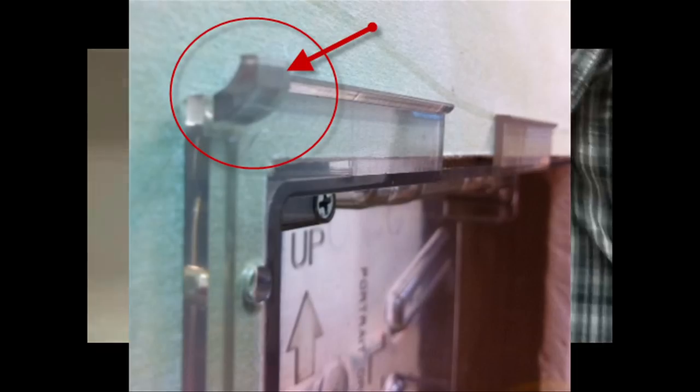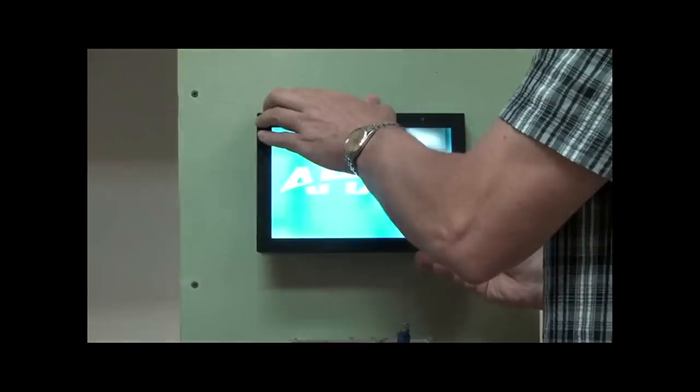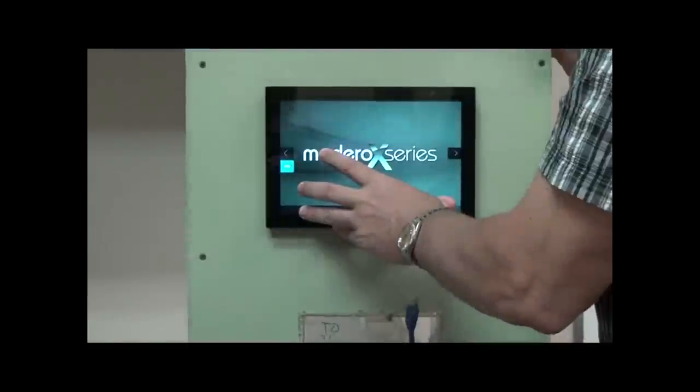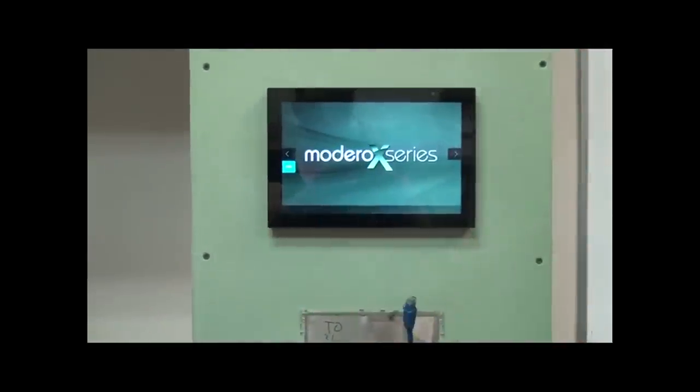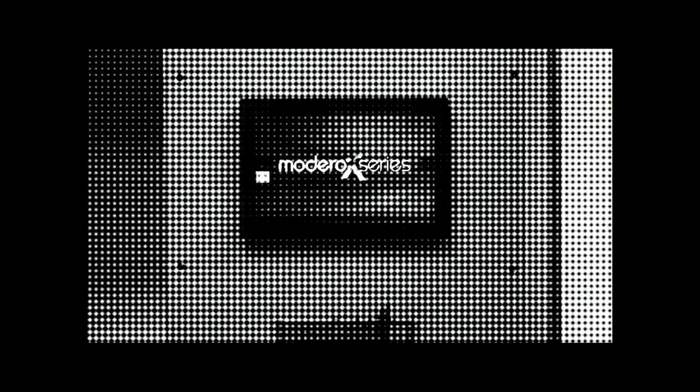Attach the panel to the hooks, then rotate the panel down and press evenly to engage both snaps. It's the same box if you're installing portrait mounts. Snaps and hooks will be on the sides of the box rather than top and bottom. That's it!